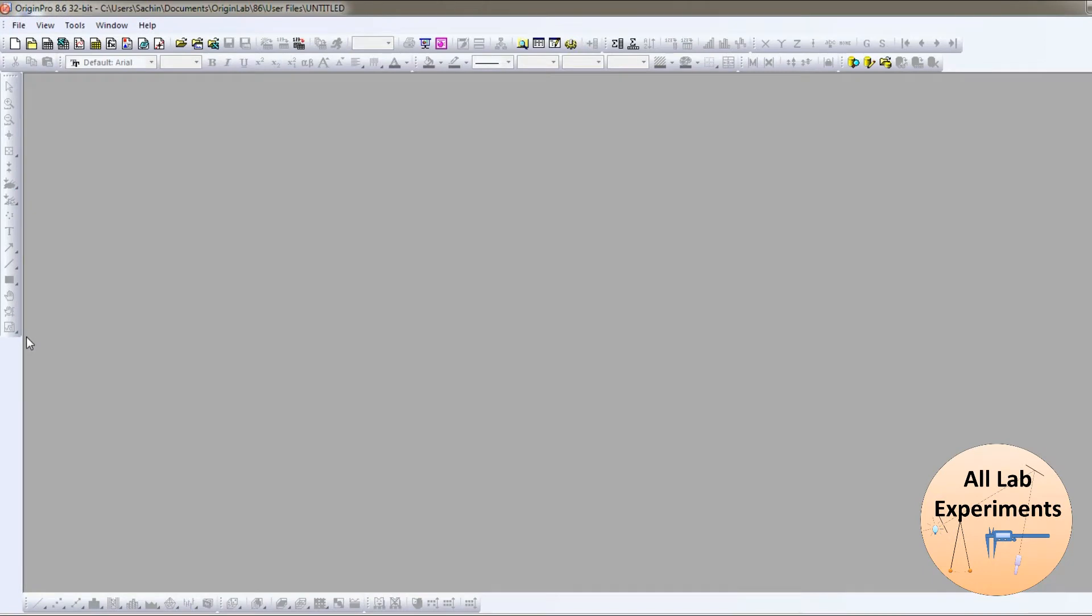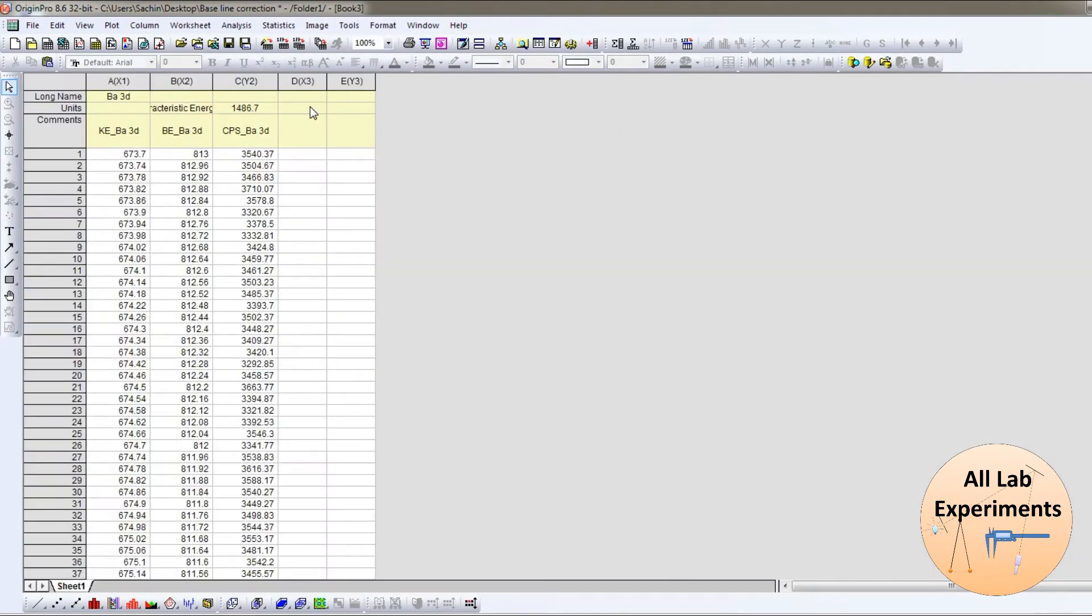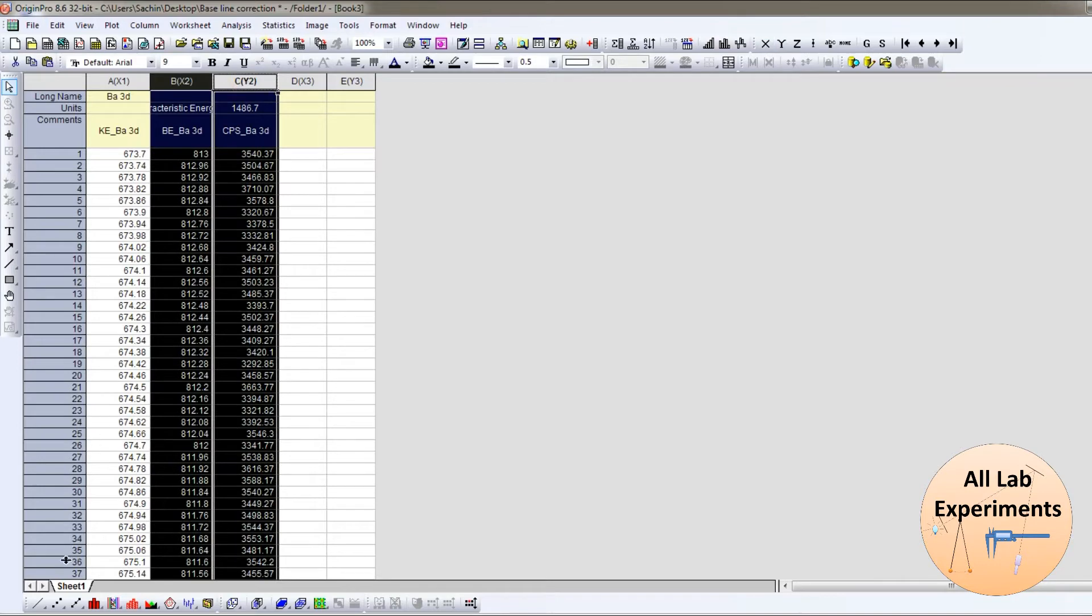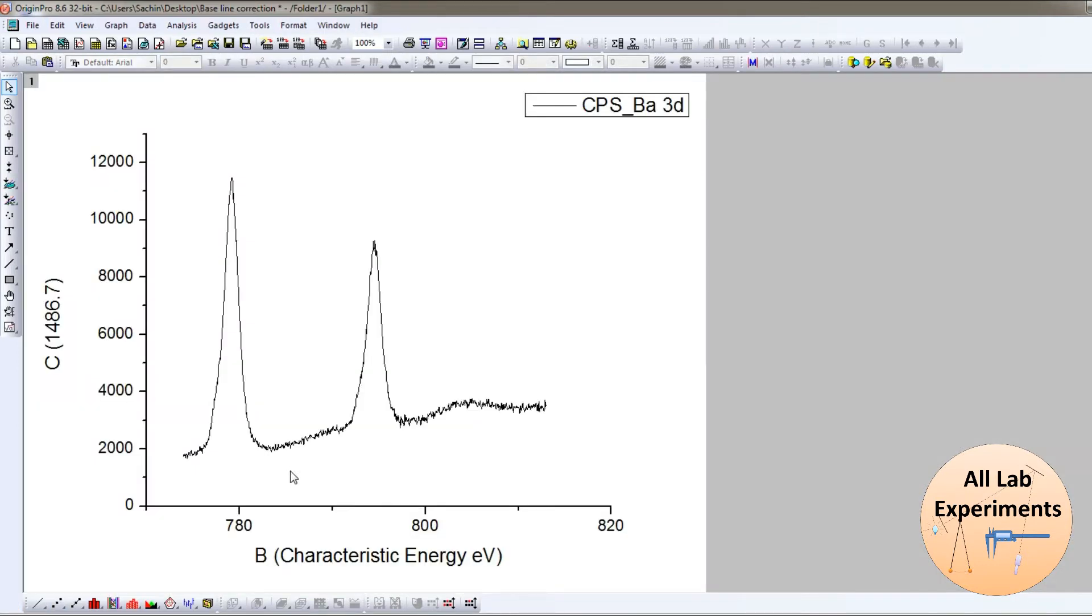Here in this file I have an XPS data of barium. I have the characteristic binding energy along the x-axis and counts per second (CPS) along the y-axis. I can plot this data and I get a graph like this.